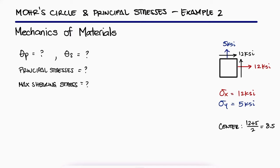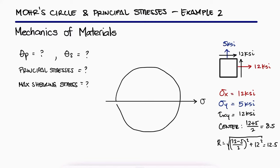Using sigma x and sigma y we can find the center of the Mohr's circle, and with those and the shearing stress, we can find the radius of the circle. With the center at 8.5 and the radius, we know that the maximum value is 8.5 plus 12.5 and the minimum value 8.5 minus 12.5.